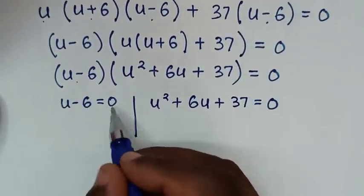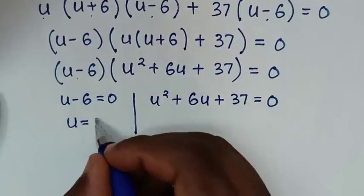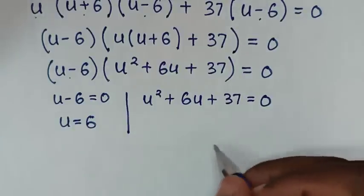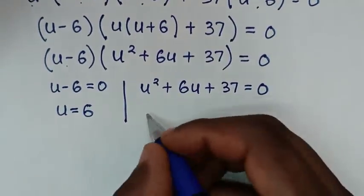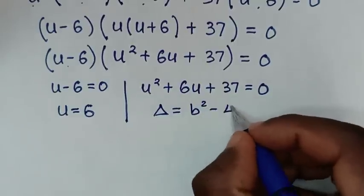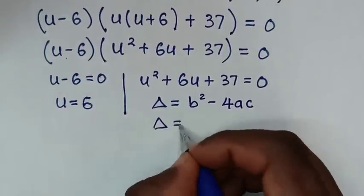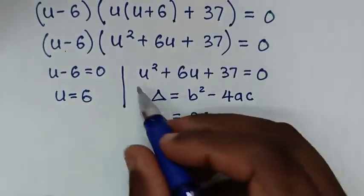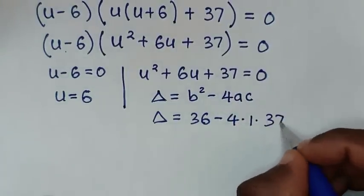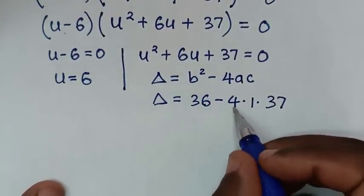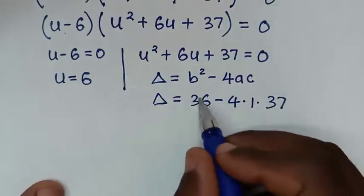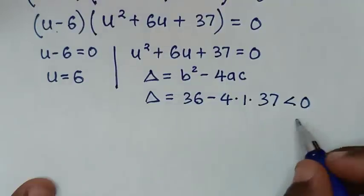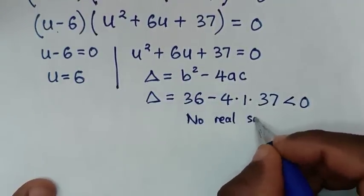From the first solution, taking negative 6 to the right side gives u equals 6. Now we check if the quadratic equation gives a real solution using the discriminant formula: discriminant equals b² minus 4ac. With b equals 6, a equals 1, c equals 37, we get 36 minus 4 times 37. Since 4 times 37 is greater than 36, the discriminant is less than 0, so there is no real solution from the quadratic.